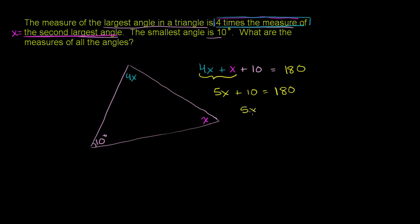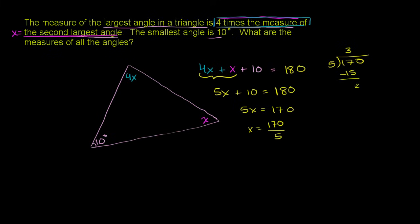Subtract 10 from both sides: 5x equals 170. So x equals 170 over 5, which is 34. We can verify: 5 goes into 170 — 5 goes into 17 three times (3×5=15), remainder 2, bring down 0, 5 goes into 20 four times with no remainder. So x equals 34.